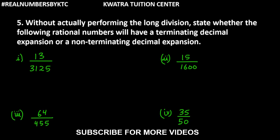Let's start with question number 5. It says: without actually performing the long division, state whether the following rational numbers will have a terminating decimal expansion or a non-terminating decimal expansion.